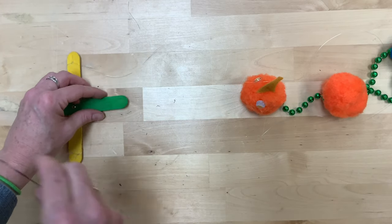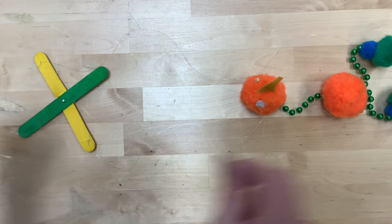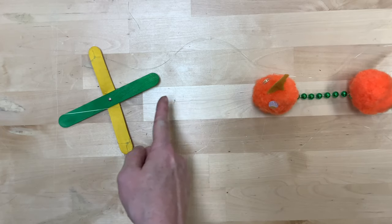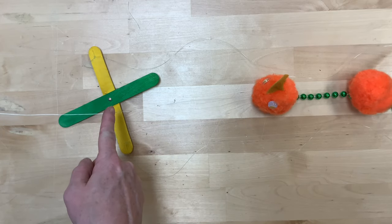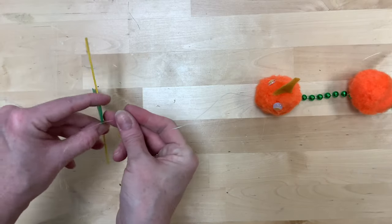We're basically going to do the same thing to fasten the body piece to the middle of your T shape. So I'm going to use the needle, go up through the middle of the pom-pom, just like we did for the head, except instead of fastening it to the end of one of the craft sticks, I'm going to fasten it in the middle.